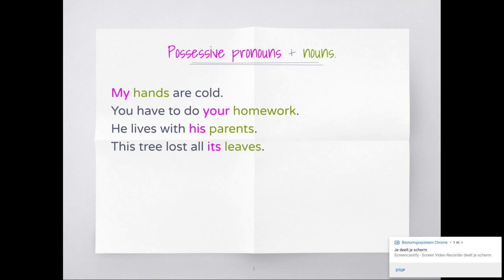In England, a tree is a thing, same as in Dutch. But in Dutch you say 'deze boom verloor al zijn bladeren,' but in English you don't know if a tree is a he or a she, so you use 'it' and therefore you have to say 'its leaves.'